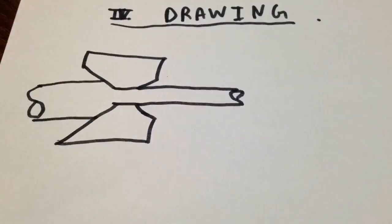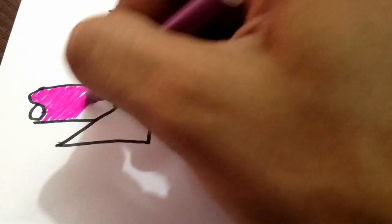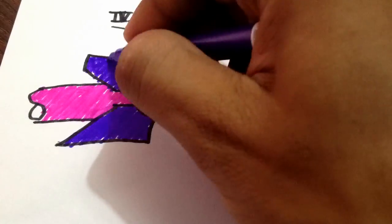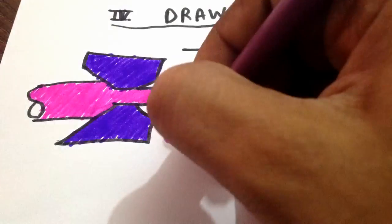Last and fourth process is drawing in which the cross-section of a bar, rod or wire is reduced by pulling it through a die opening. It makes use of tensile and compressive stresses. It is normally used for wire sizes up to 0.03 mm.